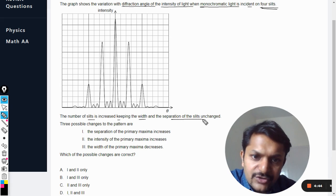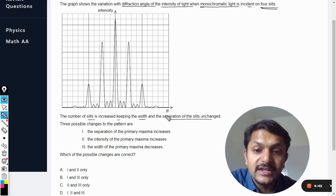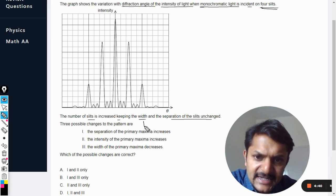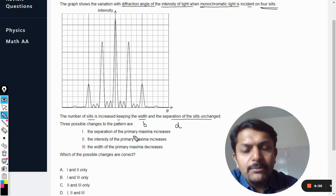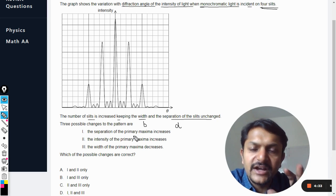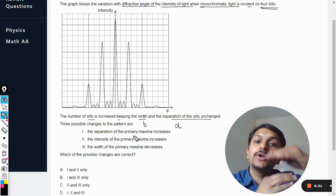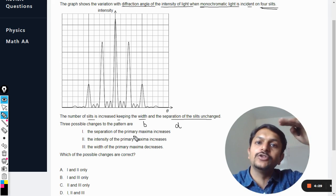Number of slits is increased keeping the width and the separation of the slits unchanged. So my dear students, width of the slit is given by b, the separation of the slit is given by d, and both of them are not increasing or decreasing, they are kept same.